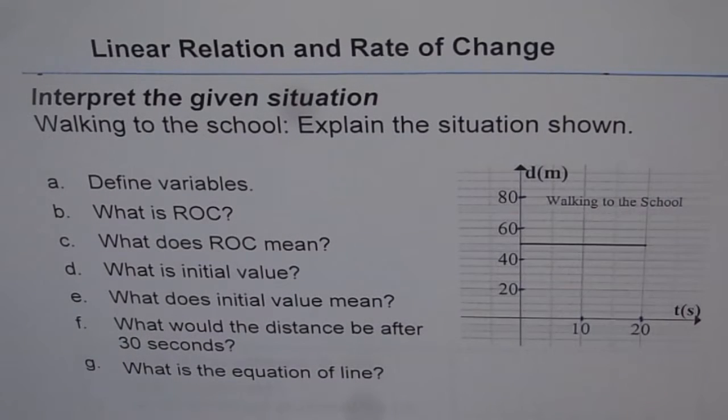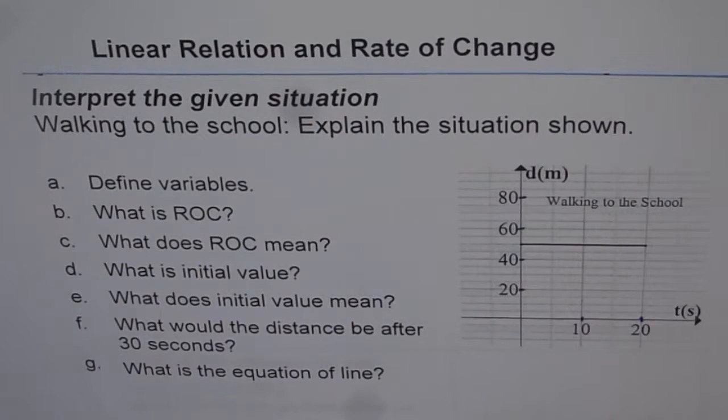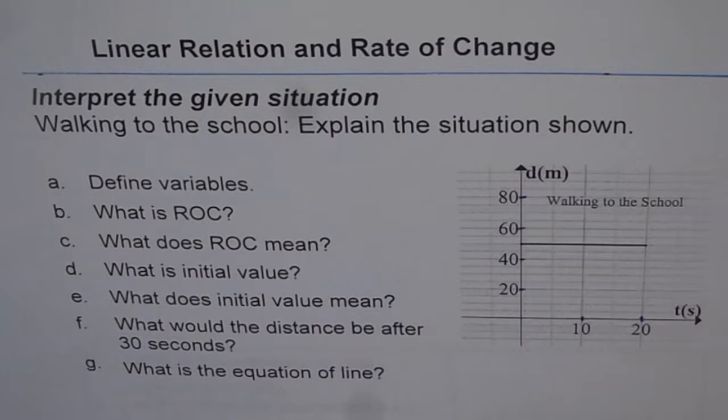Here is another very interesting example for you to understand linear relations and rate of change. The graph given here is a distance-time graph which shows the position of someone walking to the school. On the horizontal x-axis we have time in seconds, and on the vertical y-axis we have distance in meters.